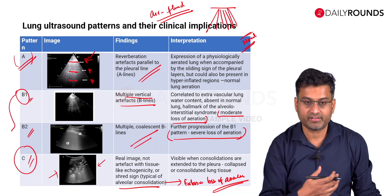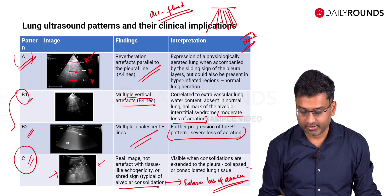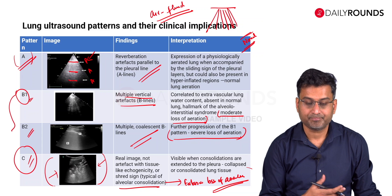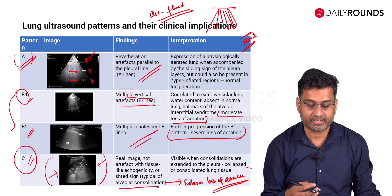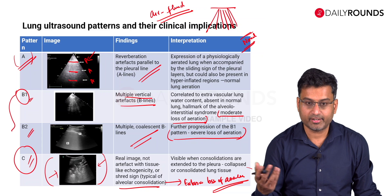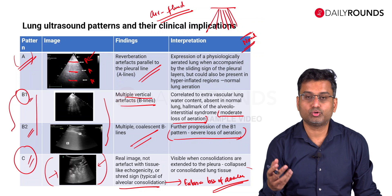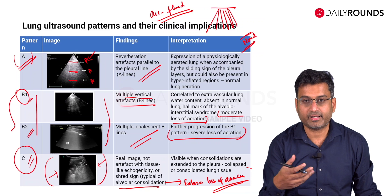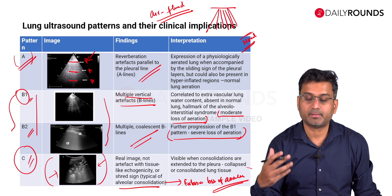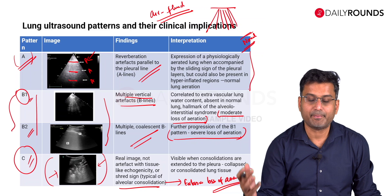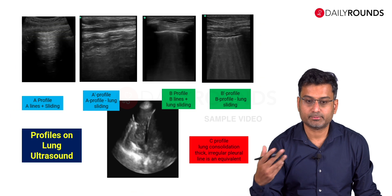By doing lung ultrasonography in various regions of the chest, we can assess varying degrees of abnormalities. If you see dense consolidation or loss of lung aeration, you need to treat the pneumonia or collapse using antibiotics, chest physiotherapy, and recruitment maneuvers. If you see a B1 or B2 pattern indicating lung congestion, these patients might benefit from higher PEEP or fluid removal. Looking at the A pattern indicates good lung aeration, and generally you do not need to worry in those cases unless there is a very specific situation.